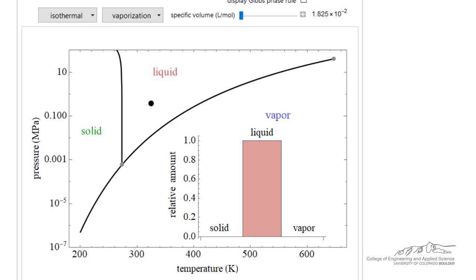I'm going to briefly describe how to use this phase diagram for water. We're plotting the log of pressure on the y-axis, temperature on the x-axis, and then we have a bar graph that shows the relative amounts of each phase.